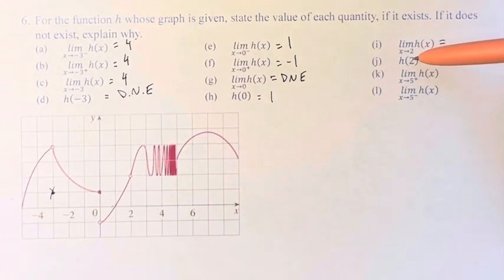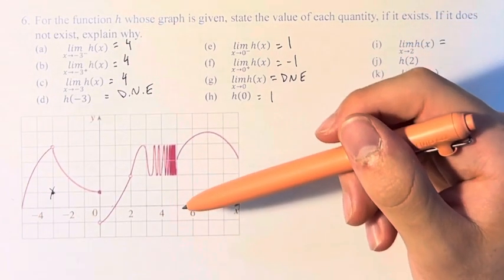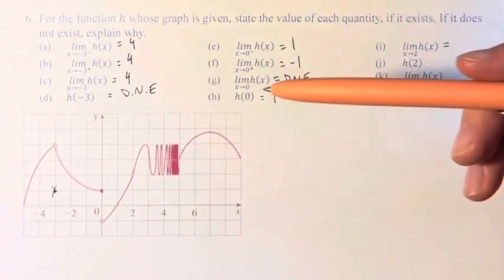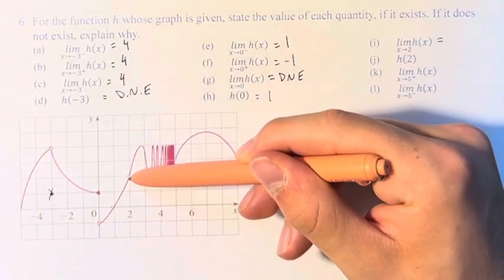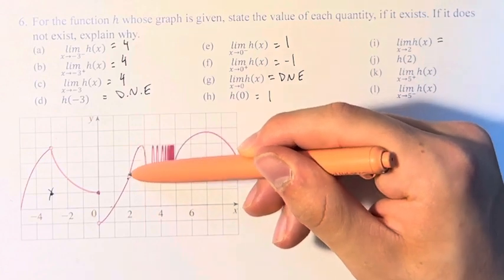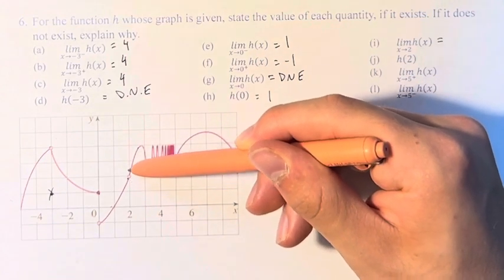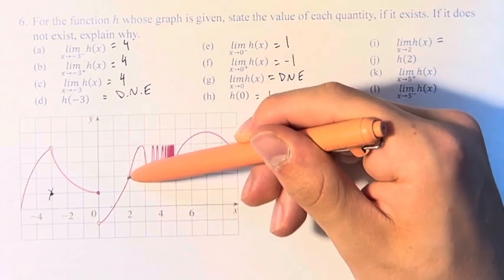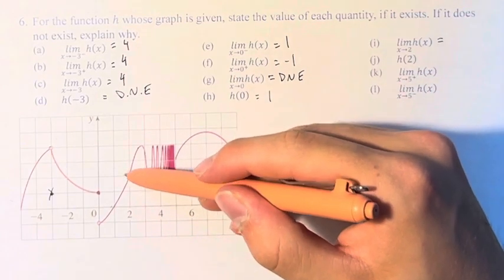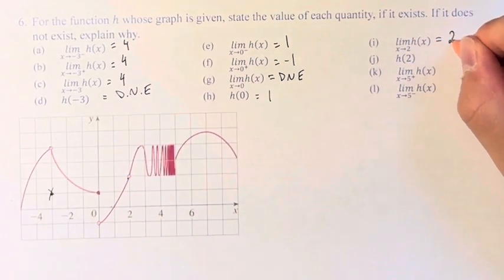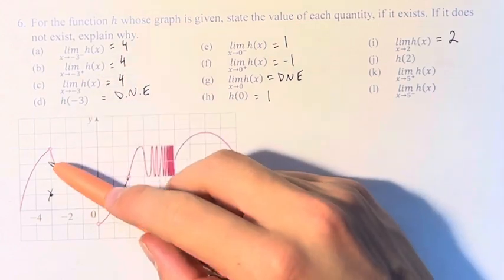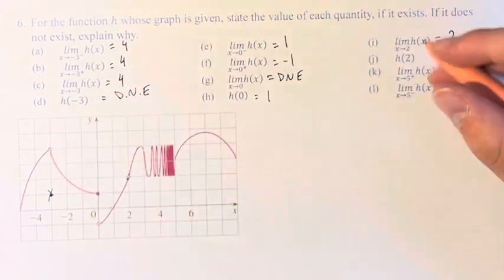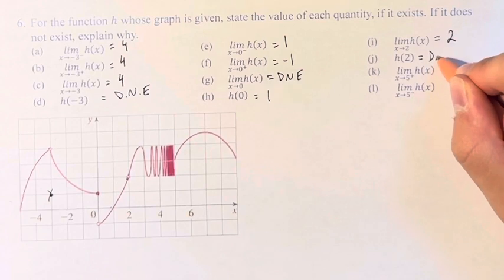Next, we have the limit as x approaches 2 of h of x. We can see that we have from the left and the right, as we approach the value of x is equal to 2, we come to this point right here. This point has a y value of 2. And notice that this point has an open circle. So just like over here, since we don't have a closed circle, the value of h at 2 does not exist.